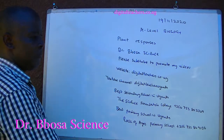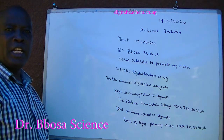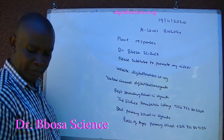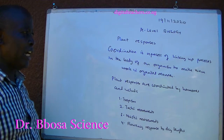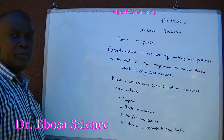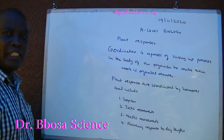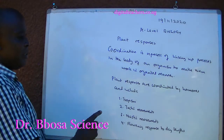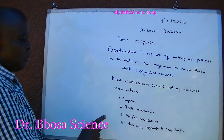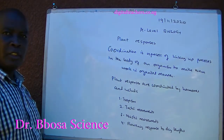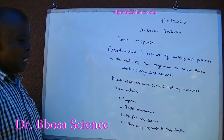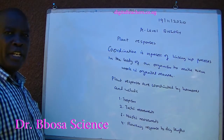Coordination is a process of linking up processes in the body of an organism to make them work in an organized manner. Plant responses are coordinated by hormones, and include tropism, tactic movements, nastic movements, and flowering response to day length.